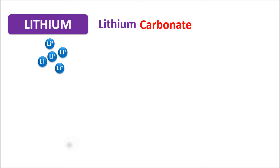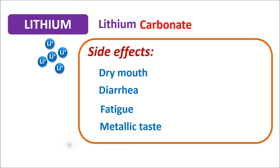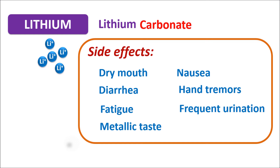With chronic use of lithium, we can observe important side effects. This drug mainly produces dry mouth, diarrhea, fatigue, weakness, and a metallic taste in the mouth. Lithium can also produce central side effects like nausea, hand tremors, and frequent urination. It can produce polyuria, meaning increased excretion of body fluids along with loss of minerals. In elderly patients, some impairment of memory can also be observed.